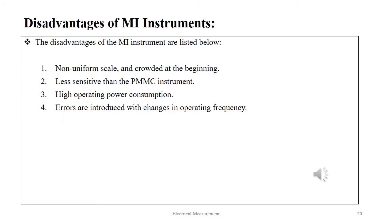The disadvantages of the MI instrument are as follows: non-uniform scale crowded at the beginning; less sensitive than the PMMC instrument; high operating power consumption; and errors are introduced with changes in operating frequency.